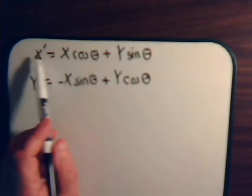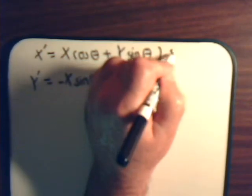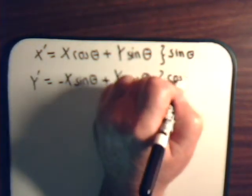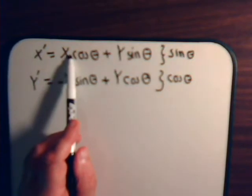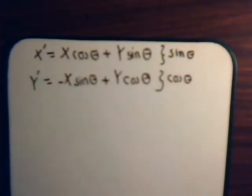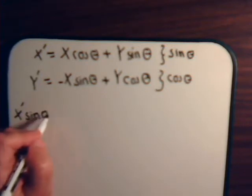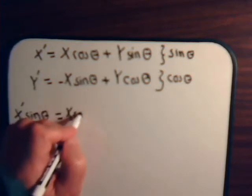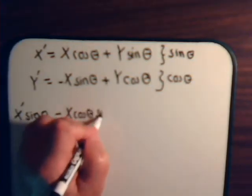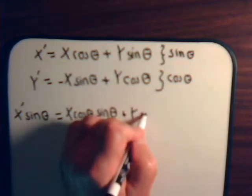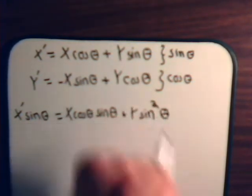Multiply both sides of this equation by the cosine of theta. So we're going to have x sine theta cosine theta minus x sine theta cosine theta — adding them together, hopefully that will disappear. So here we will have x prime times the sine of theta equals x cosine theta times sine of theta, plus y times sine squared theta.